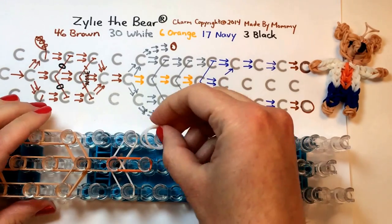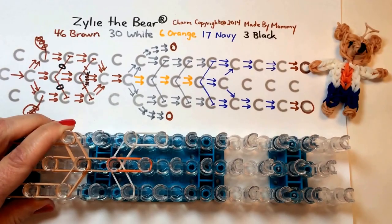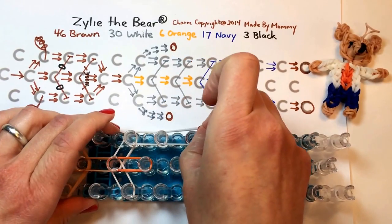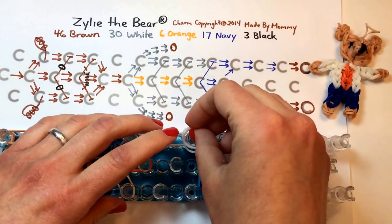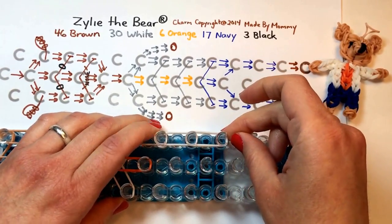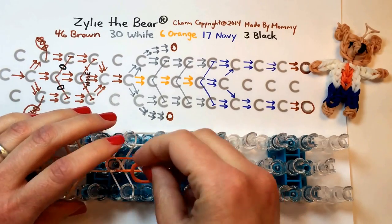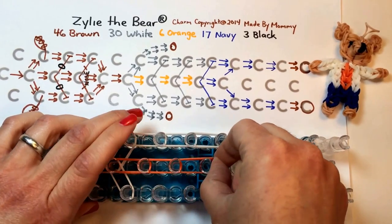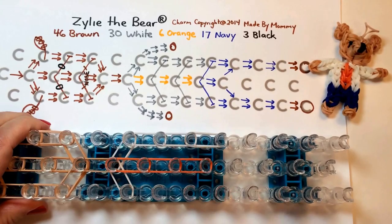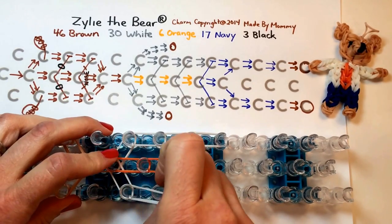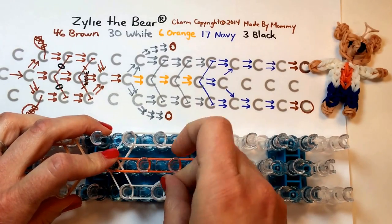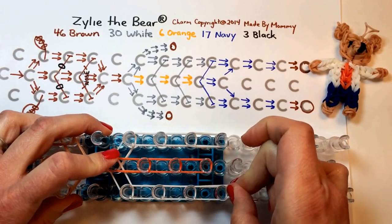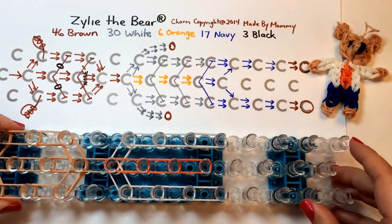And then we continue with white for the next three positions. Back to the middle, we're going to do two more orange. And then white on the other side, two at a time.